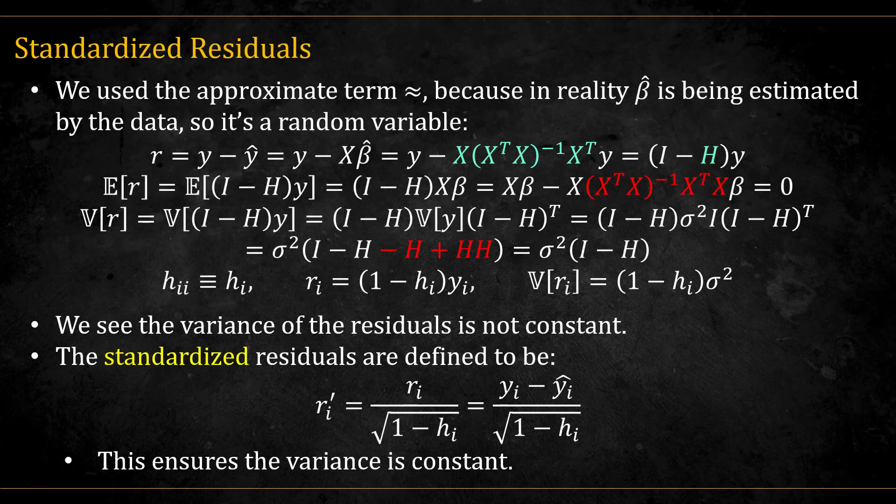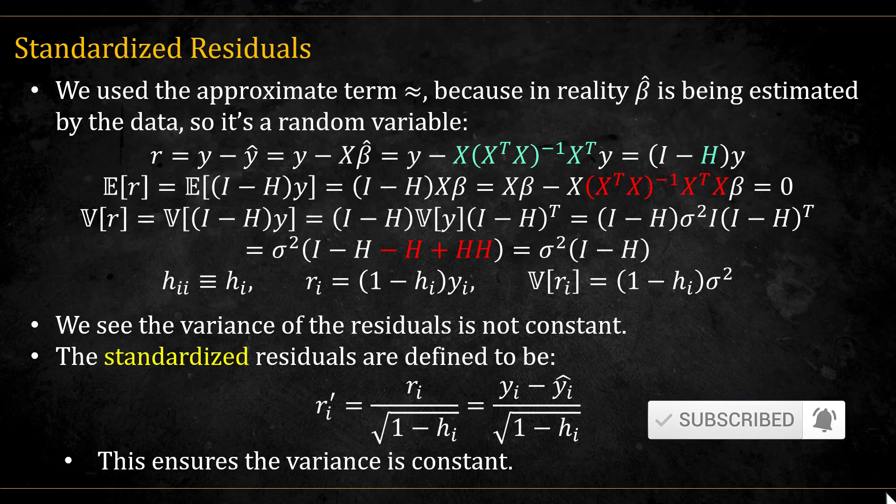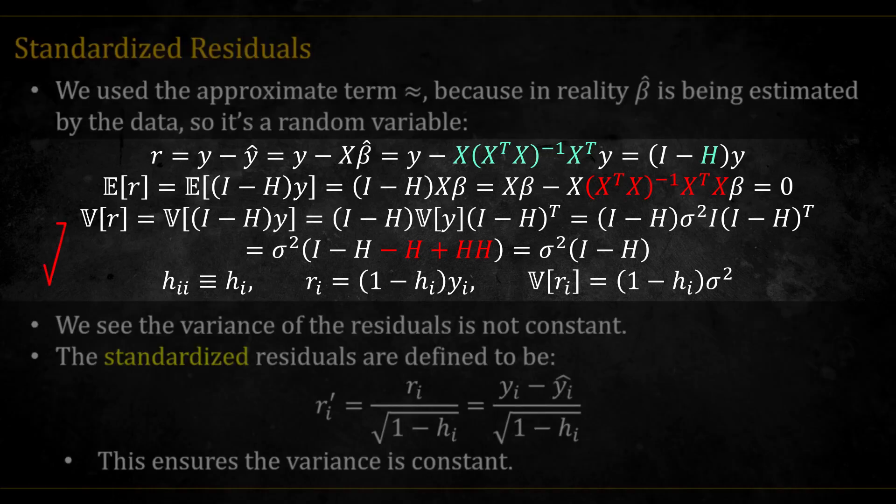These residuals are usually good enough, but if we want to be a bit more accurate, then we should remember that the beta hat is actually estimated from the data, and so is a random variable. If you pause the video and follow the math here, you can see that the residuals will have a mean of zero, but the variance won't be constant.